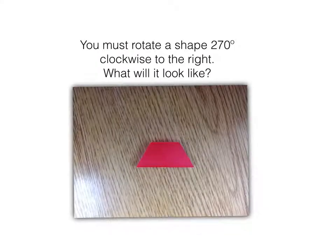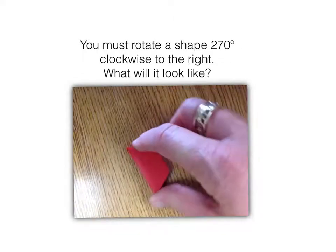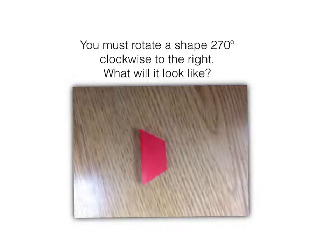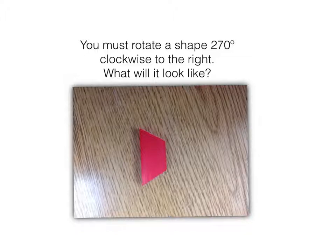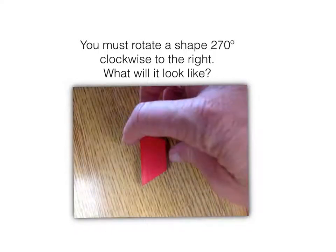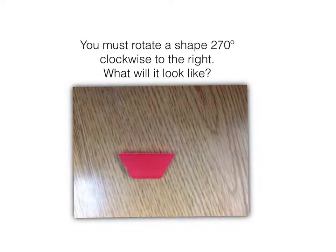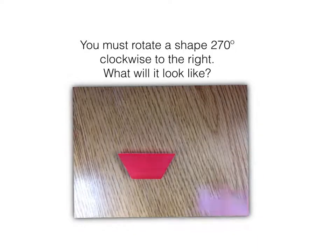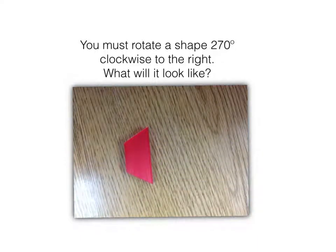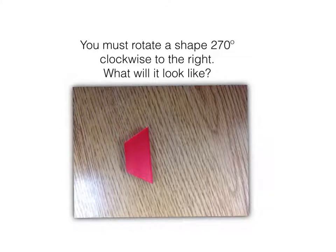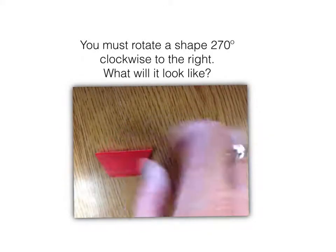Let's look at this example. They want us to rotate a shape 270 degrees clockwise to the right. So if I turn it 90 degrees, it would look like this. Another 90 degrees, or 180, it would look like this. And another 90, which is 270, the final figure would look like this.